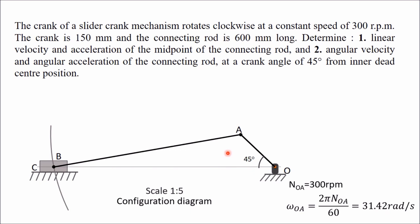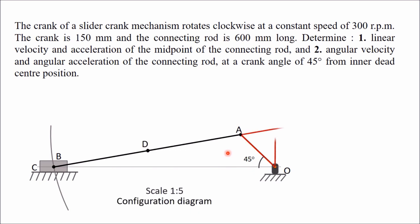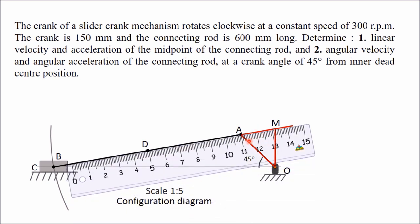Extend BA and draw a line perpendicular to OB from O; these intersect at M, giving velocity diagram OAM. To find the midpoint D of the connecting rod, mark the midpoint of AM — measuring AM as approximately 22 mm, the midpoint X is at 11 mm from A.